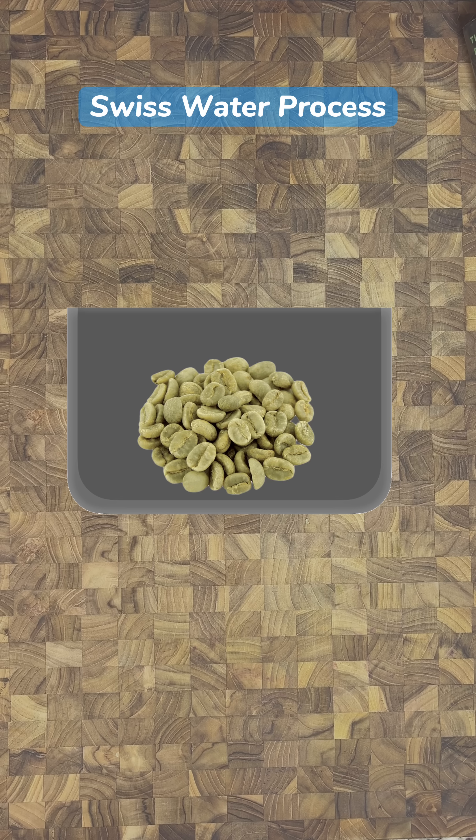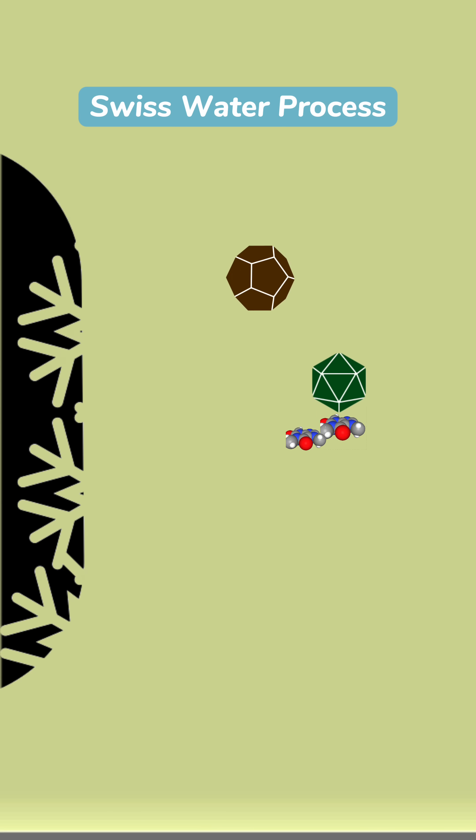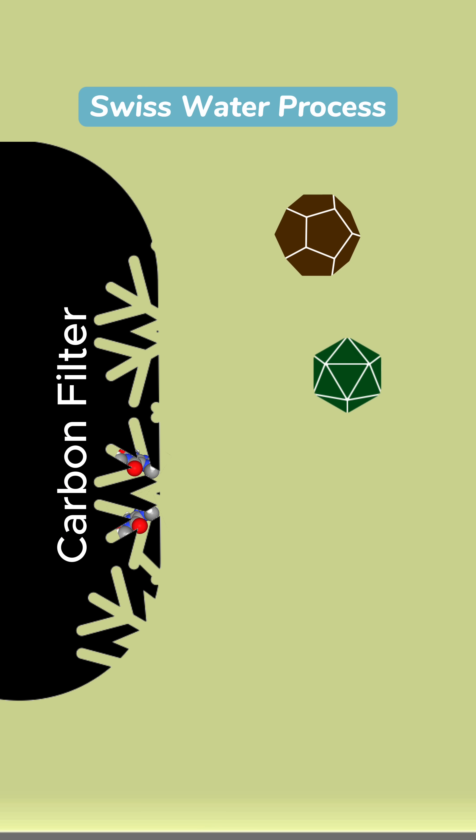In the Swiss water process, a sacrificial batch of green coffee beans are soaked to make an extract of caffeine and other molecules from the coffee. An activated carbon filter has very tiny pores that the small, flat caffeine molecules can fit into, but most other molecules can't, or have the wrong polarity.